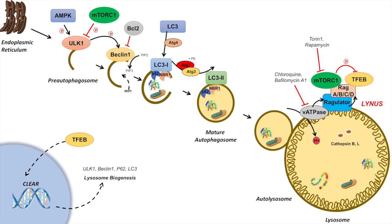Some of the TFEB transcriptional targets necessary for lysosomal biogenesis or the autophagy pathway itself include ULK1, Beclin-1, P62, and LC3. When TFEB is activated, it can upregulate many different parts of the macroautophagy pathway. There is also a related transcription factor called ZK-Scan3, which is the opposite of TFEB — it actually inhibits the transcription of these autophagy-related proteins and processes.